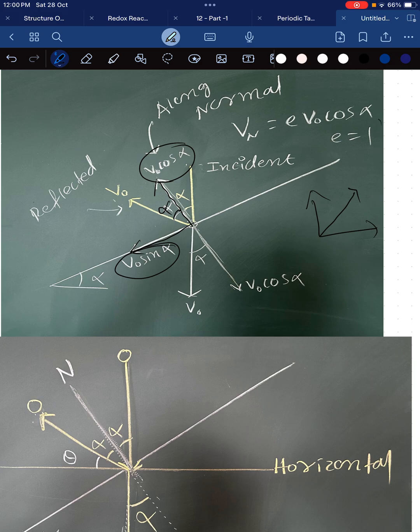When e is 1, the angle of incidence and angle of reflection will be same. So here it will reflect with the same angle alpha.